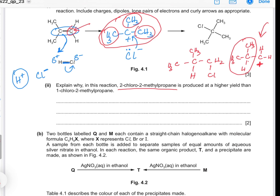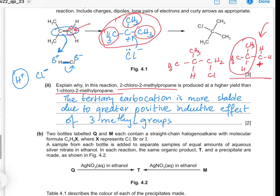For 2-chloro-2-methylpropane, the carbocation is tertiary — the positive carbon is bonded to three alkyl groups — making it more stable than the primary carbocation, because the methyl groups donate electrons to the positive carbon, reducing the positive charge. The major product always forms via the most stable carbocation; the primary carbocation is less stable and forms the minor product.